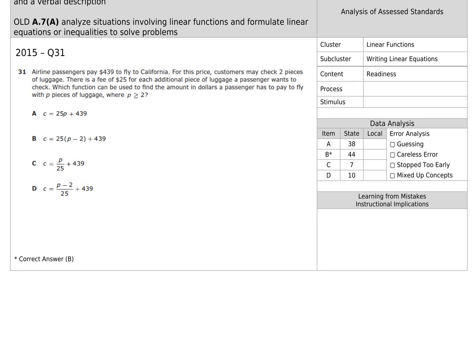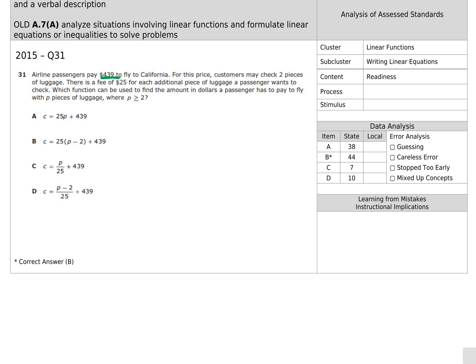On this question, we have another word problem. It's talking about you have to pay $439 for California. And then you can check two pieces, but there's $25 for each additional piece on top of that. So two free, and then you pay $25 above that. So what would the equation be? Well, we're not going to get away from having to pay the 439. That's a given. So that's just going to be written down, 439. It won't repeat like luggage. Every new piece of luggage, I pay extra. The ticket is already paid. So the x is going to go by the luggage.